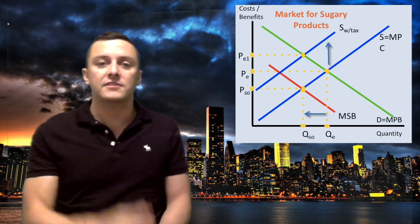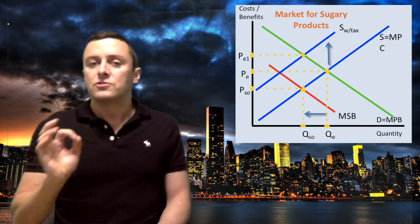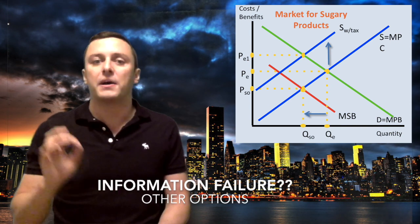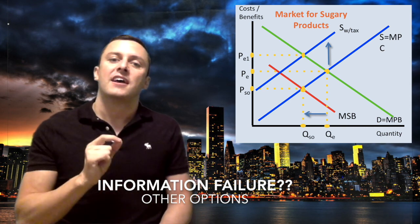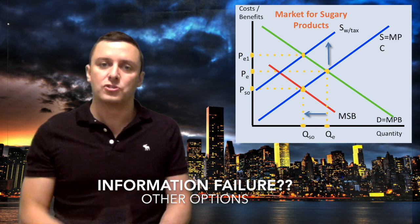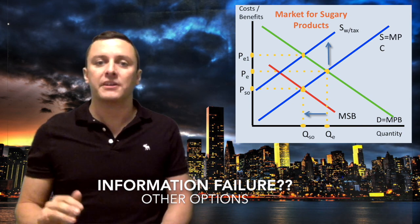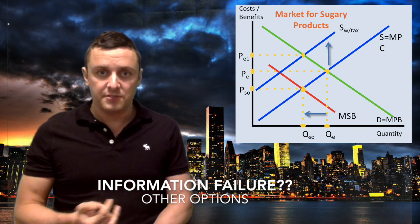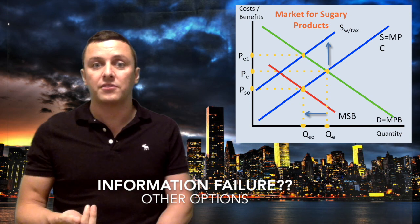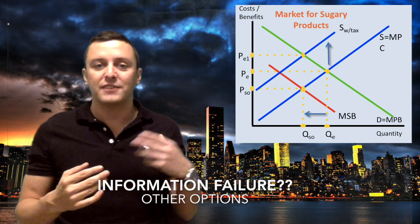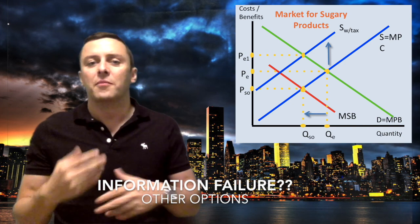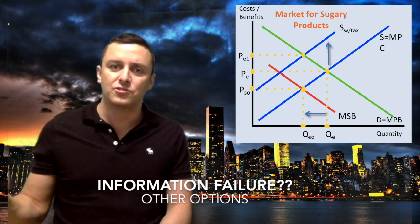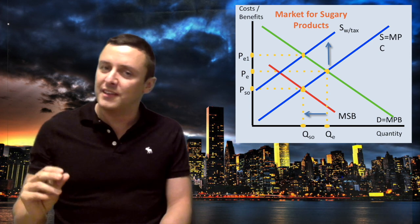The last argument is one I mentioned before about information failure. If this market failure is caused by the population having lack of information about that topic, is a tax the most effective way to stop people consuming sugar? There are a whole other range of policy options the government can use. They can invest in education programs, advertising programs, and they can even invest in labeling, introduce regulations on how much sugar can be put in one item. All these kinds of things are other options that the government can introduce. Would they perhaps be a better way to address the market failure problem?